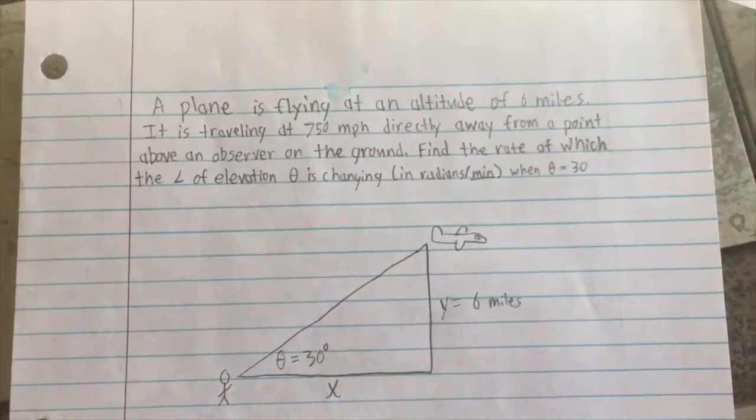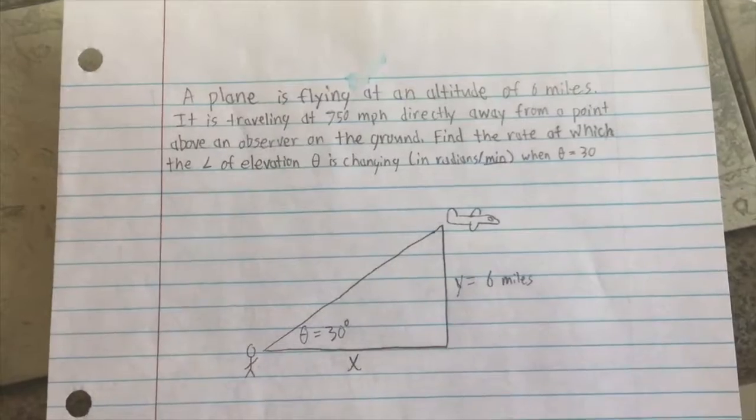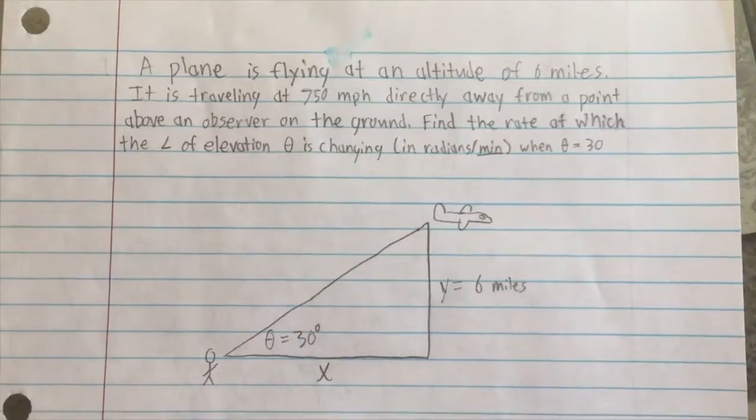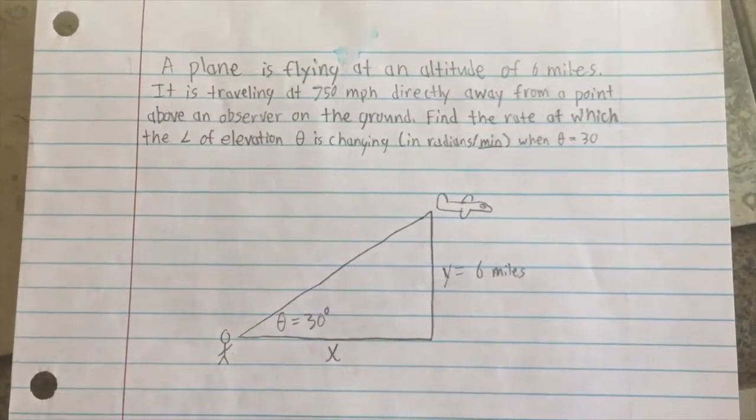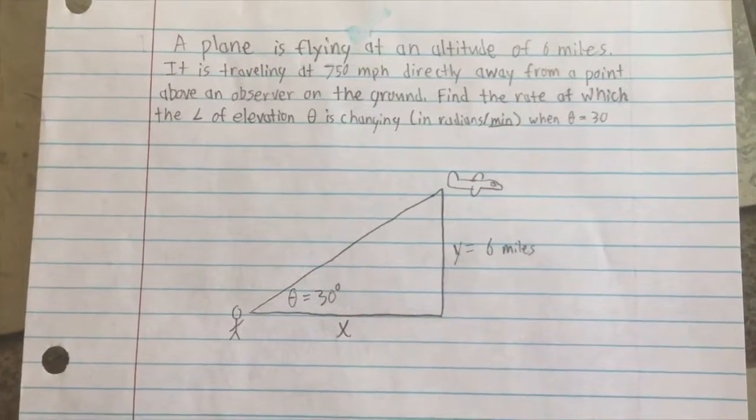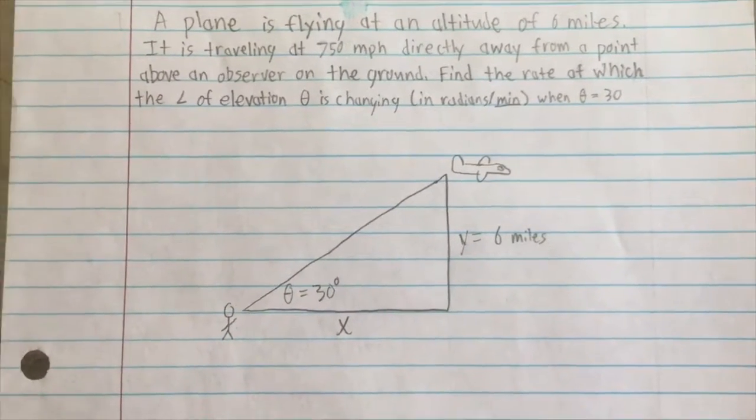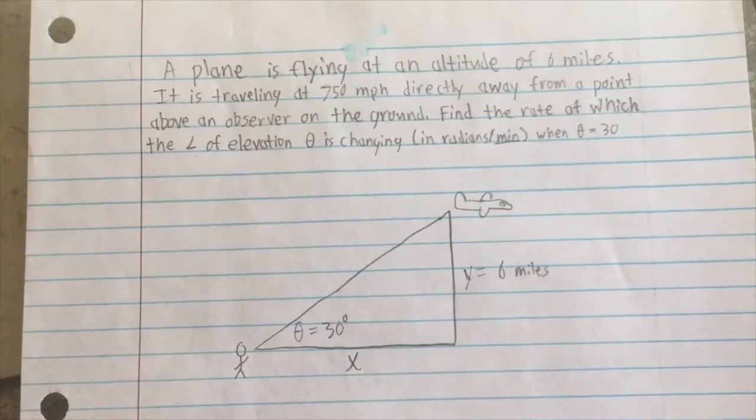Okay, so our plane is six miles off the ground and moving 750 miles per hour away from us. The current angle of elevation is 30 degrees. What is the rate of the change of the angle of elevation in radians per minute?